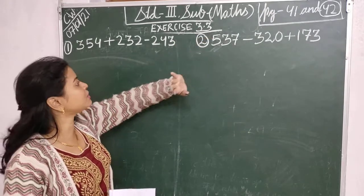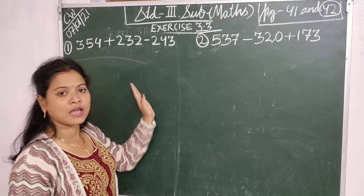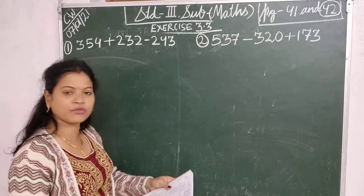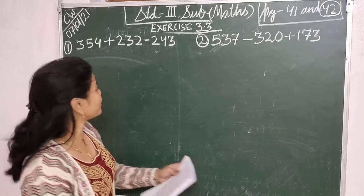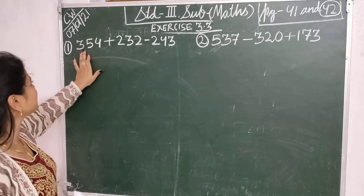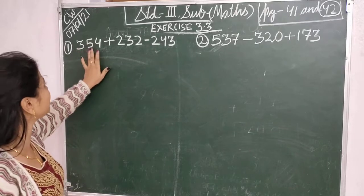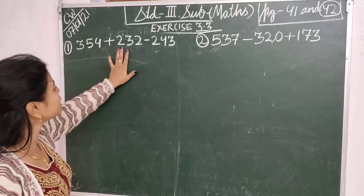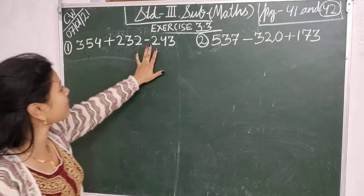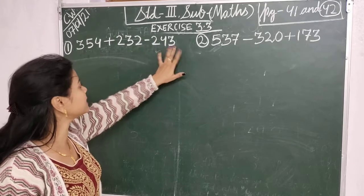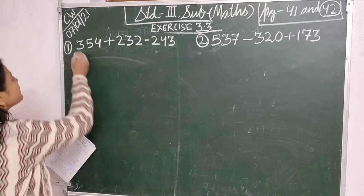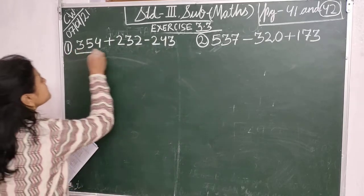Children, I am going to show you a few sums and that will help you to do the full exercise. So your first question is: 354 plus 232 minus 243. Children, you have to first add these numbers.